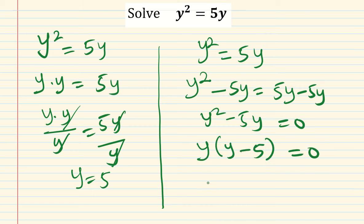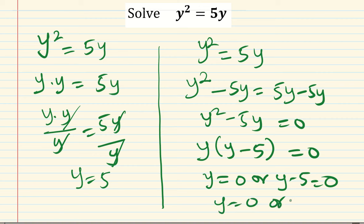If you have two numbers, y times (y - 5) equal to zero, it means one of the numbers is zero or the other one is zero. So y = 0 or y - 5 = 0.